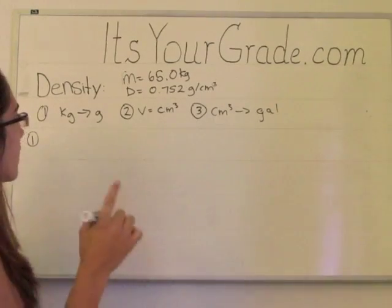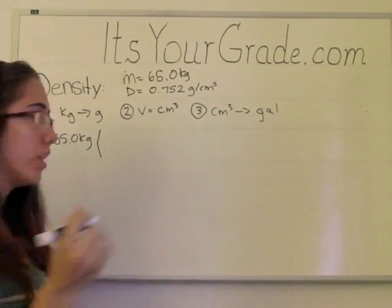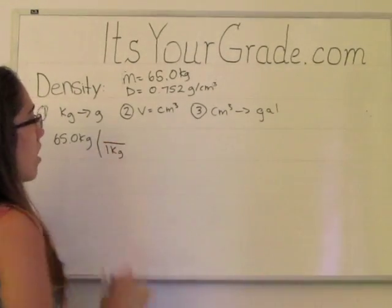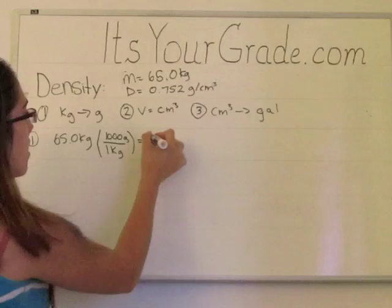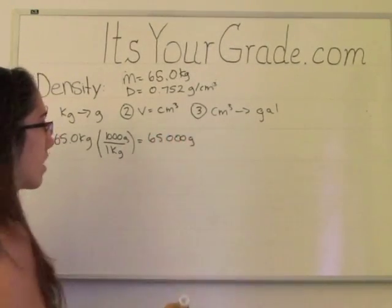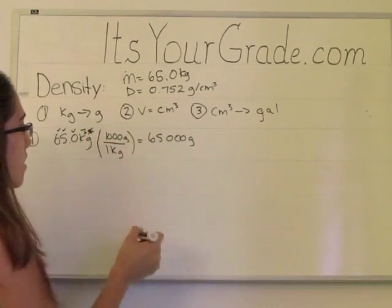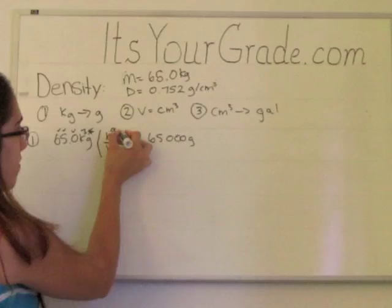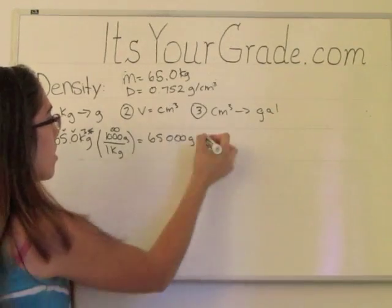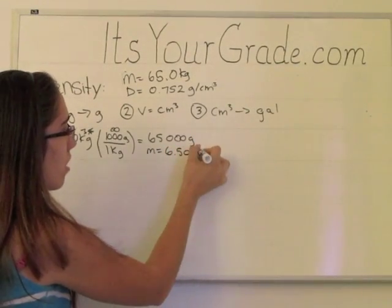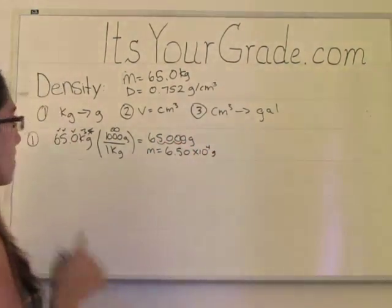So for the first step, kilograms to grams, we have 65.0 kilograms. We know that one kilogram, which goes on the bottom to cancel, has 1,000 grams. So this equals 65,000 grams. We need to check significant figures: 3 sig figs. And this is an exact conversion, so it's infinite. So our answer needs to have three significant figures, so we will need to use scientific notation. So the mass now equals 6.50 times 10 to the 4th grams. That's step one.